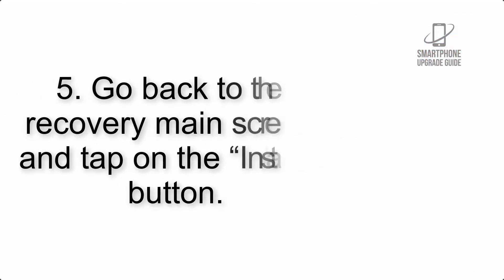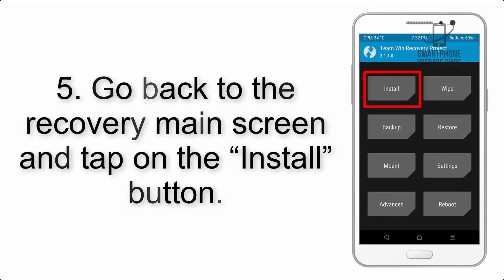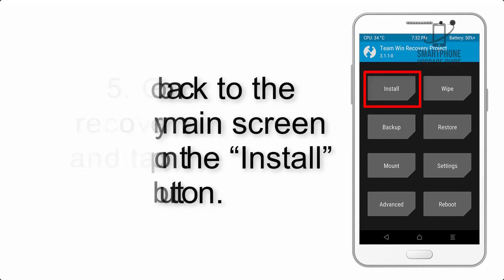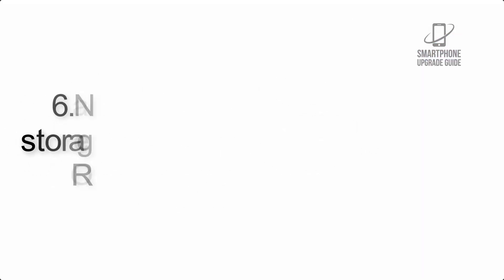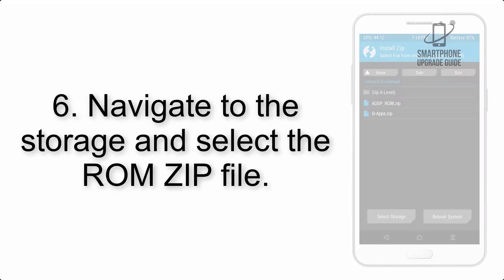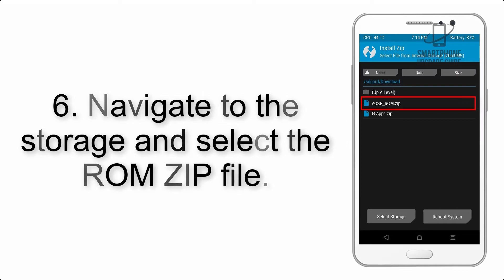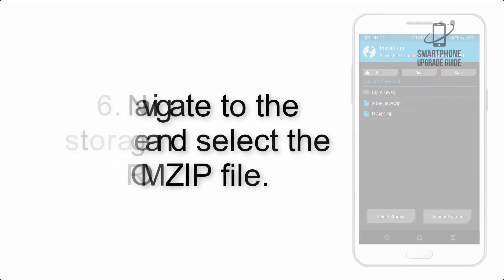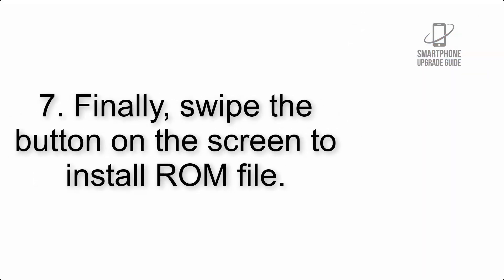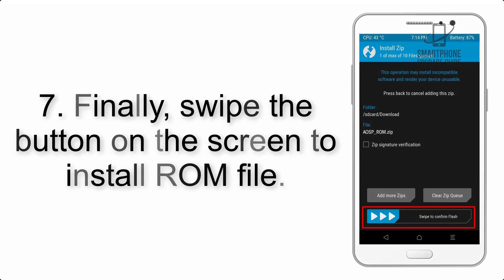Step 4: Swipe the button to wipe the device. Step 5: Go back to the recovery main screen and tap on the Install button. Step 6: Navigate to the storage and select the ROM zip file.